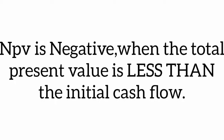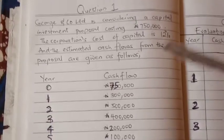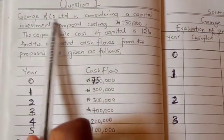NPV is positive when the total present value is greater than the initial cash flow, and NPV is negative when the total present value is less than the initial cash flow.